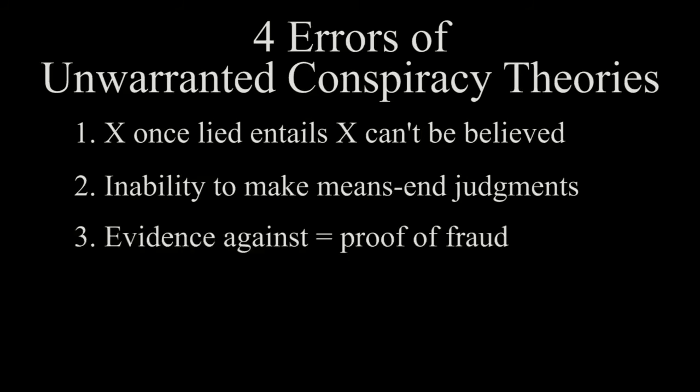Error three: treating evidence against the theory as evidence for it. Conspiracy theorists do not just argue that the evidence could point toward a different conclusion. Rather, they claim that the evidence supporting the official verdict is suspect, fraudulent, faked, or coerced. And because this fraudulent evidence exists, that further proves that the conspiracy theory is correct. Error number four: the classical logical fallacy of post hoc ergo propter hoc — after this, therefore because of this.